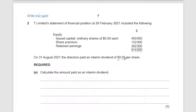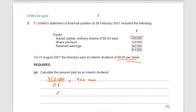The directors paid an interim dividend of $0.05 per share. Be careful — don't make the mistake of taking 450,000 as the number of shares; that's just the value. To find the number of shares, divide 450,000 by $0.50 per share, which gives 900,000 shares. Then 900,000 × $0.05 = $45,000 interim dividend.